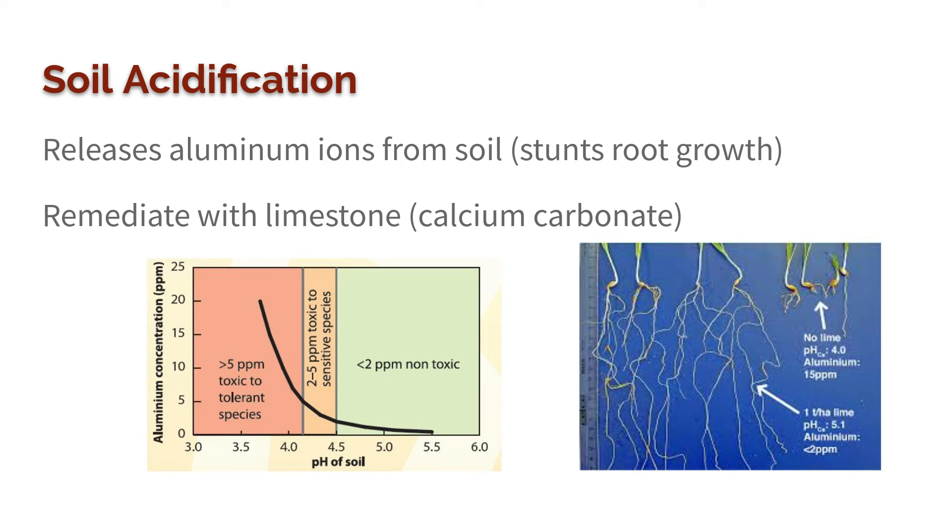One thing we can do if we have an area with acidic soil is remediate with limestone. Limestone is also made of calcium carbonate. You see this kind of pops up a lot, and that's just because calcium carbonate reacts with acids. So it can be a bad thing if something is made out of calcium carbonate that we want to keep, but we can also use calcium carbonate to neutralize that acid.